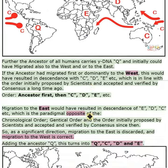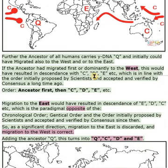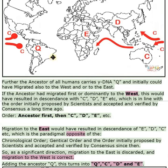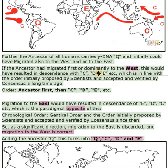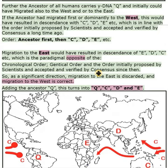The ancestor of all humans carries Y-DNA-Q and initially could have migrated to the west and/or to the east. If the ancestor had migrated first or dominantly to the west, this would have resulted in descendants with C, D, E, etc., which is in line with the order initially proposed by scientists and accepted and verified by consensus a long time ago — order: ancestor first, then C, D, E, etc. Migration to the east would have resulted in descendants of E, D, C, etc., which is the paradigmatic opposite of the chronological order, genetic order, and the order initially proposed by scientists and accepted and verified by consensus since then.